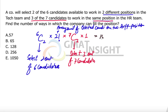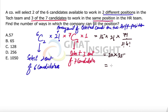C(6,2) is 15, multiplied by 2 factorial, multiplied by C(7,3). C(7,3) equals 7! / (3! × 4!) which simplifies to 7 × 6 × 5 / 6 = 35. So 15 × 2 × 35 = 1050. The answer is option E. I hope that explains and helps — thank you so much for watching this video.